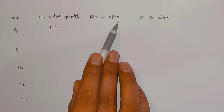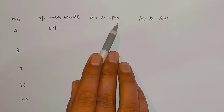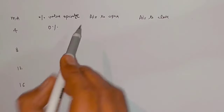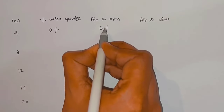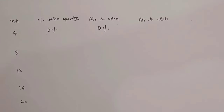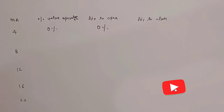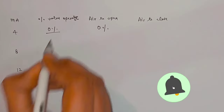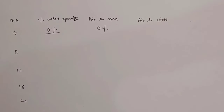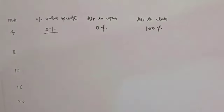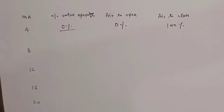When we take the air-to-open control valve and it operates 0%, its percentage opening will be 0%. But when we take the air-to-close control valve and it operates 0%, then its opening percentage will be 100%.